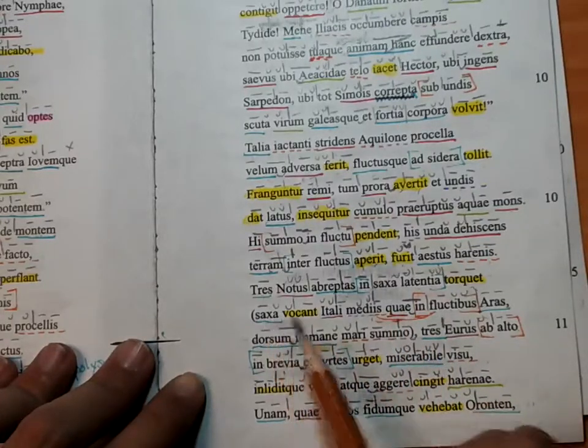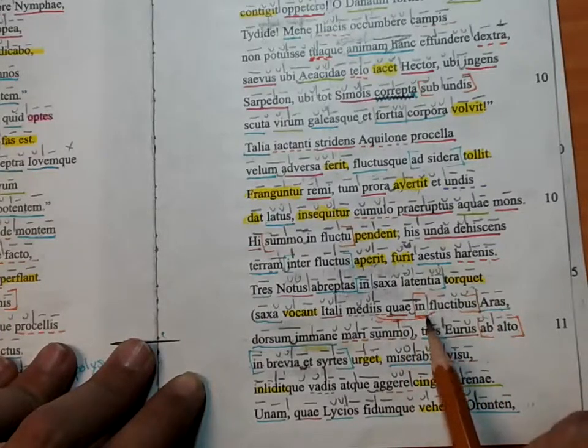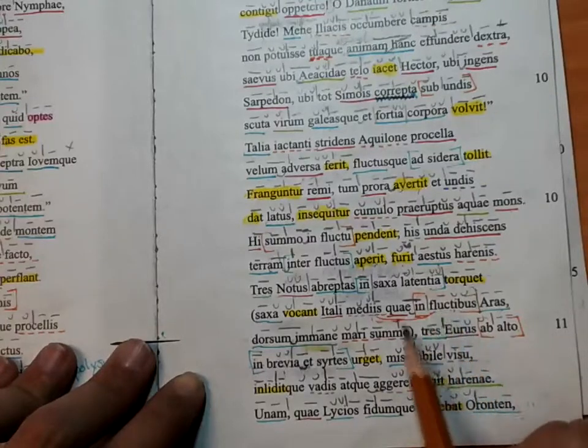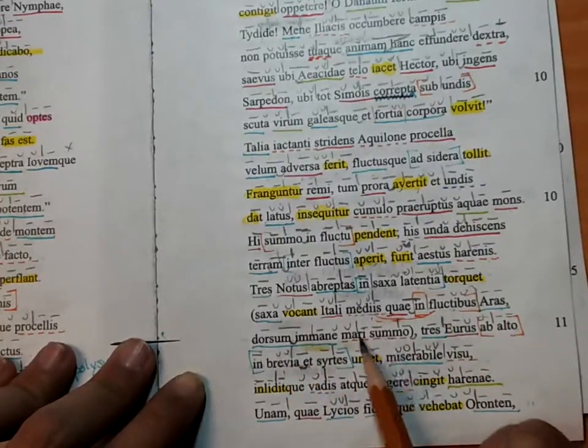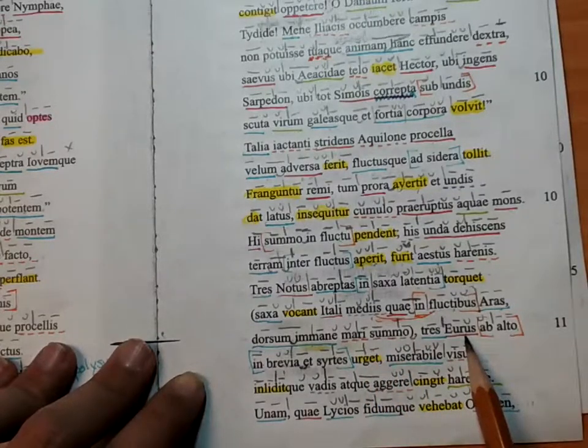Italians call the rocks 'the altars,' rocks which are in the middle of the waves, a huge reef at the top of the sea. Eurus—I think this is the west, nope, east wind—drives three ships from the sea into the shallows.